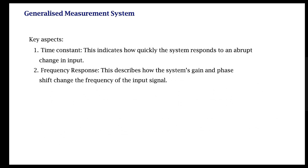The other key parameter is frequency response. The time constant is a time-domain parameter; frequency response describes the system's gain and phase shift change as frequency varies. We measure this using a frequency response curve — systematically varying the frequency of the input, measuring the gain at the output, and then computing parameters such as 3 dB cutoff frequencies and gain-bandwidth product.